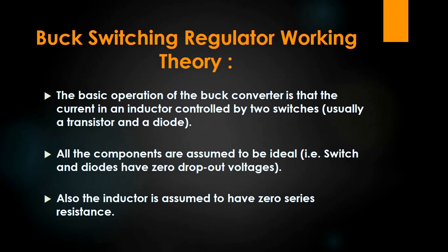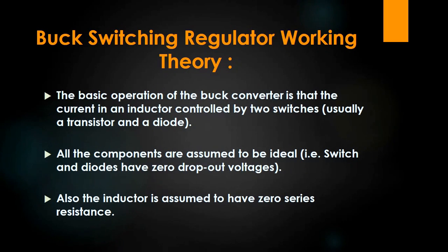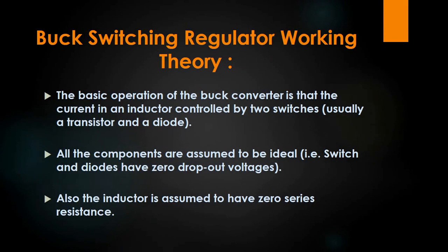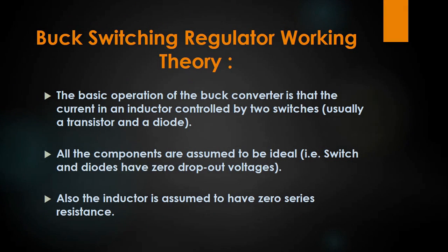Let's now look at the working theory of buck regulators. The basic operation includes current in the inductor controlled by two switches, which usually is a transistor and a diode. All the components are assumed to be ideal, which means the switch and the diode have zero dropout voltage, and the inductor is assumed to have zero series resistance. Let's look at the circuit diagram and understand the proper working.